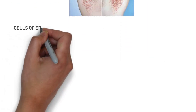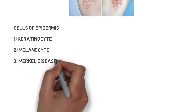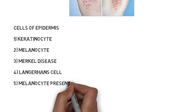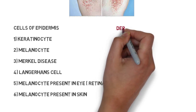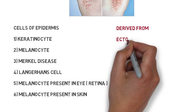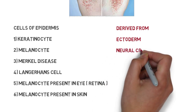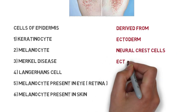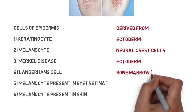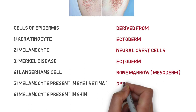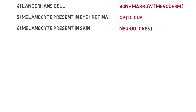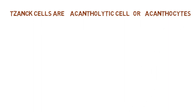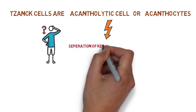The cells of the epidermis are keratinocytes, melanocytes, Merkel cells, and Langerhans cells. Regarding embryology: keratinocytes are derived from ectoderm, melanocytes are derived from neural crest cells, Merkel cells are derived from ectoderm, and Langerhans cells are derived from bone marrow (mesoderm). Melanocytes present in the eye (retina) are derived from the optic cup, while melanocytes in the skin are derived from neural crest. Acantholytic cells (acanthocytes) involve separation of keratinocytes due to a defect in desmosomes.